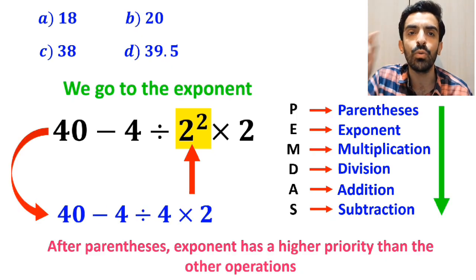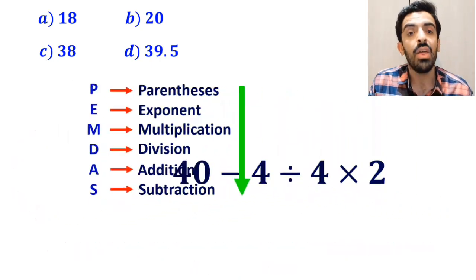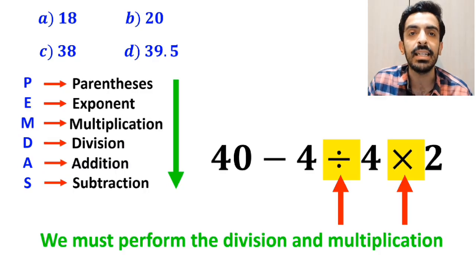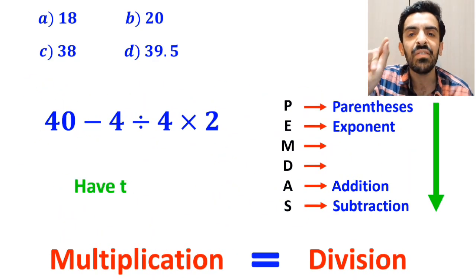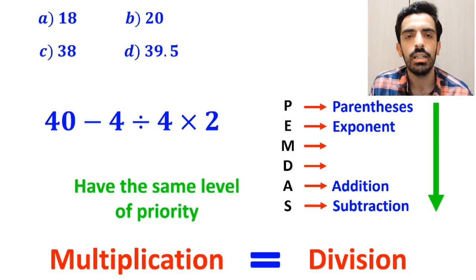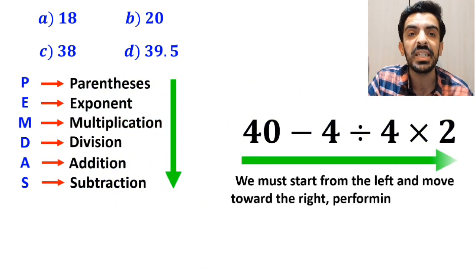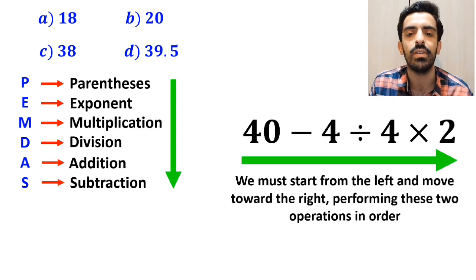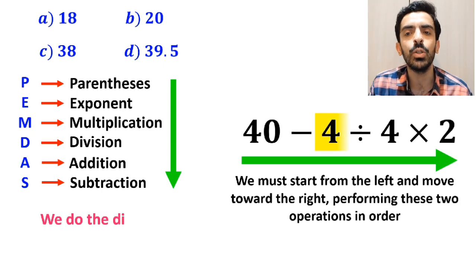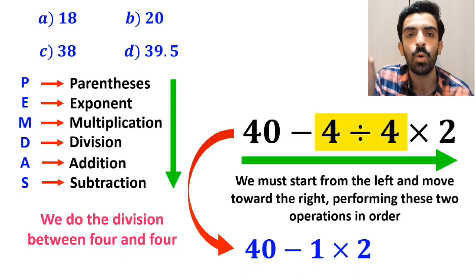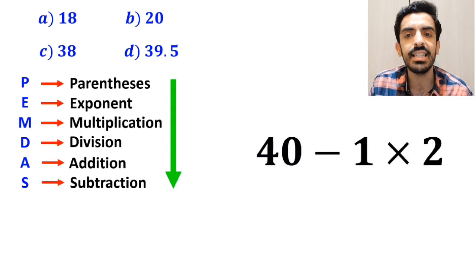So this expression simplifies to 14 minus 4 divided by 4, then times 2. Then we must perform the division and multiplication. It's really important to understand that in PEMDAS, multiplication and division have the same level of priority. In this situation, we must start from the left and move toward the right, performing these two operations in order. So first we do the division between 4 and 4, and the expression simplifies to 14 minus 1, then times 2.